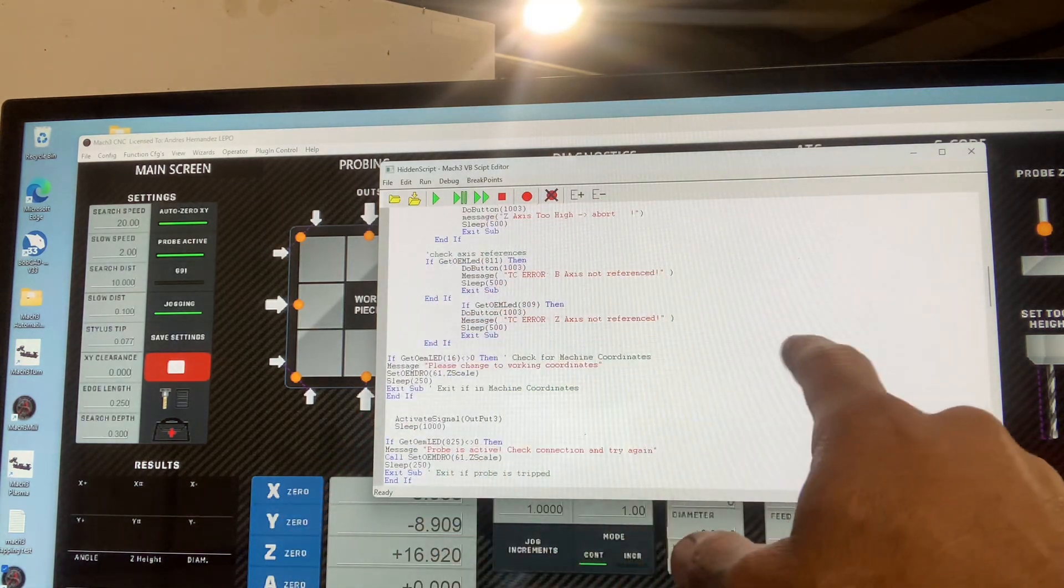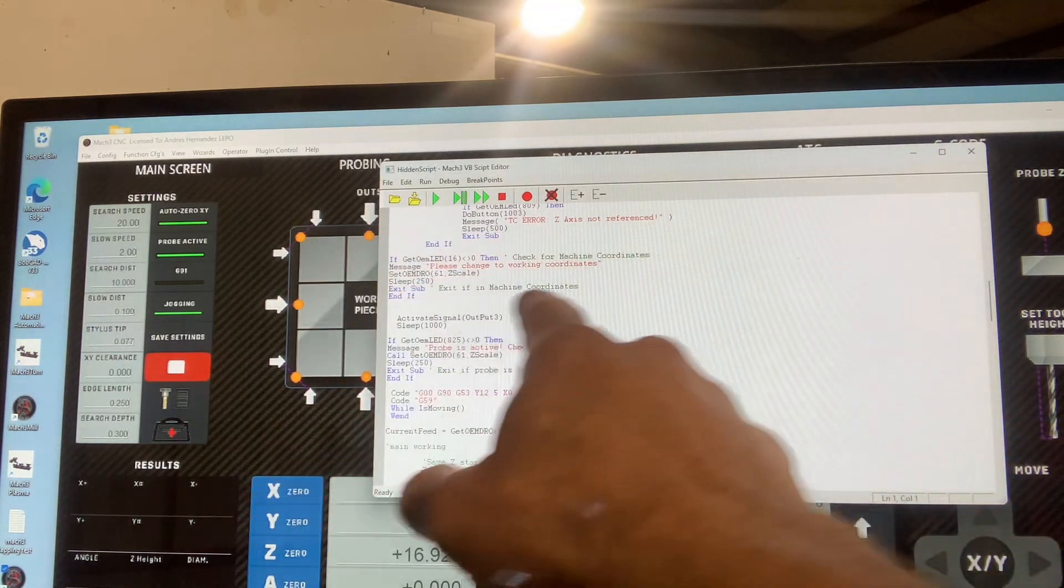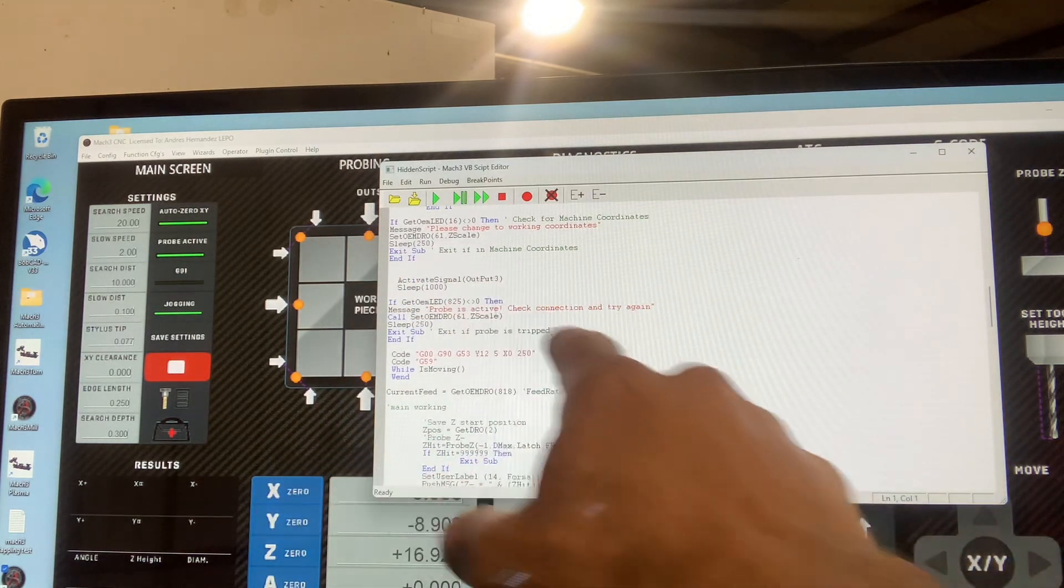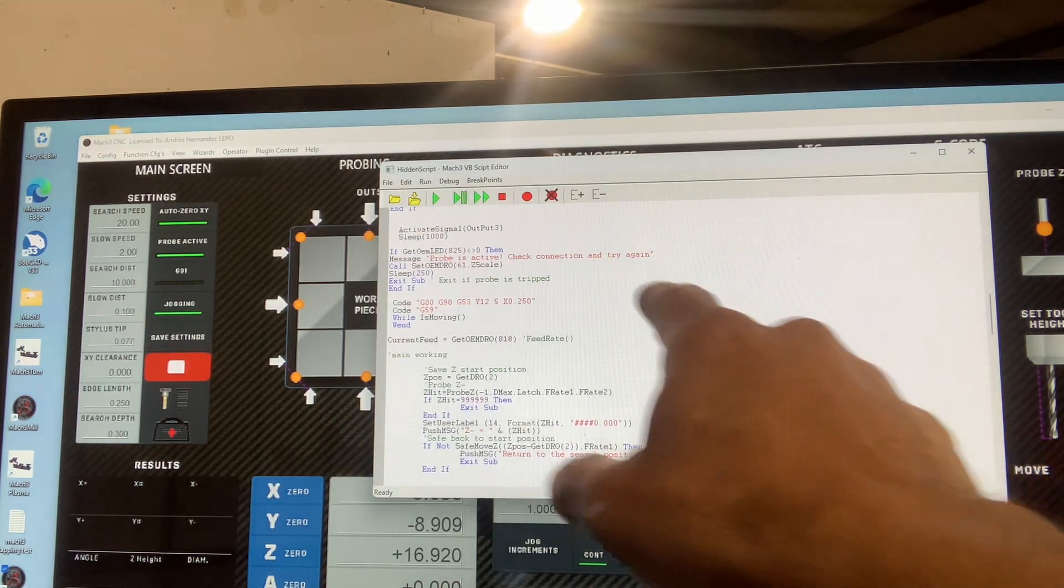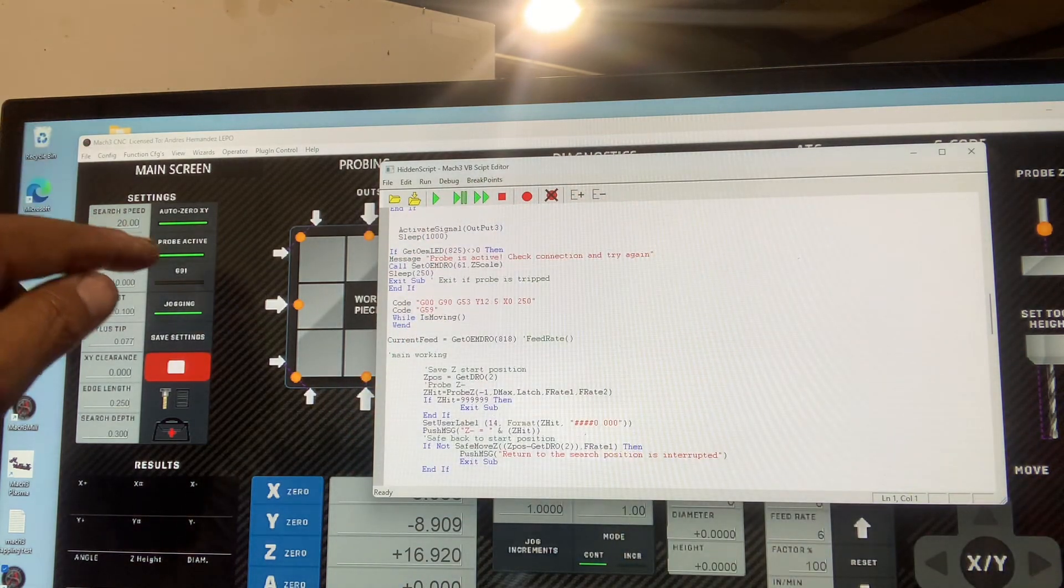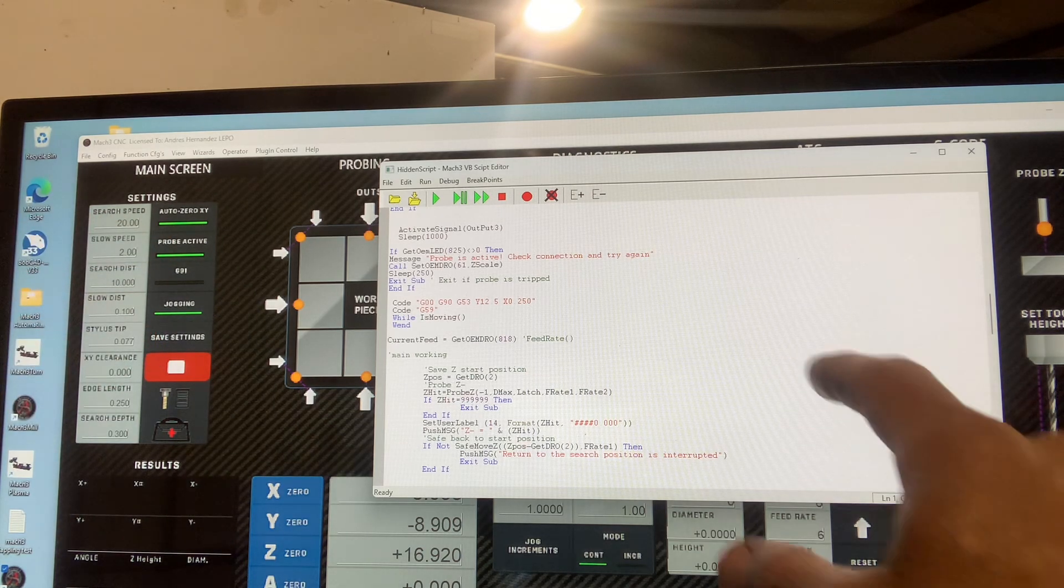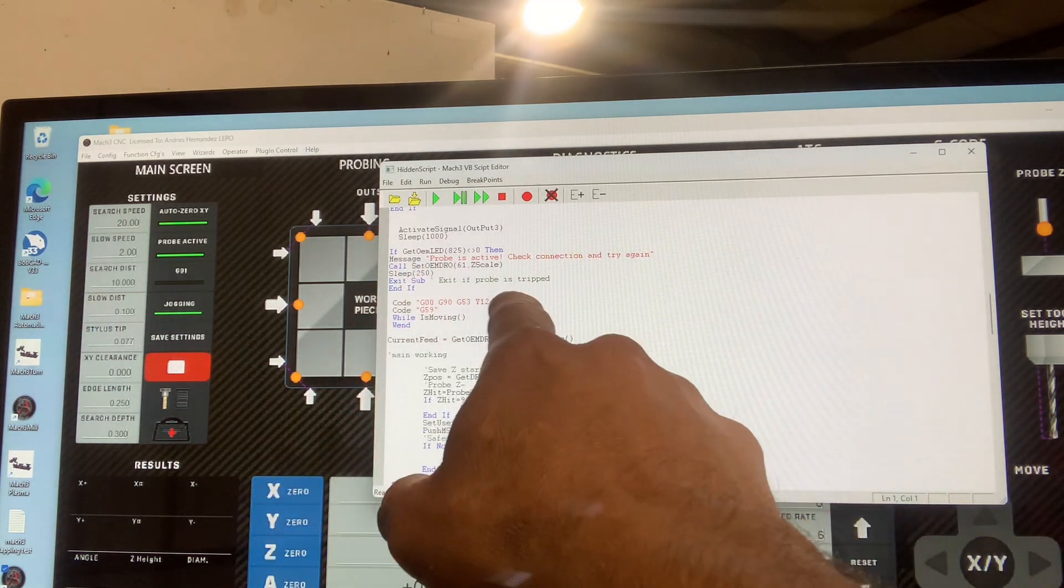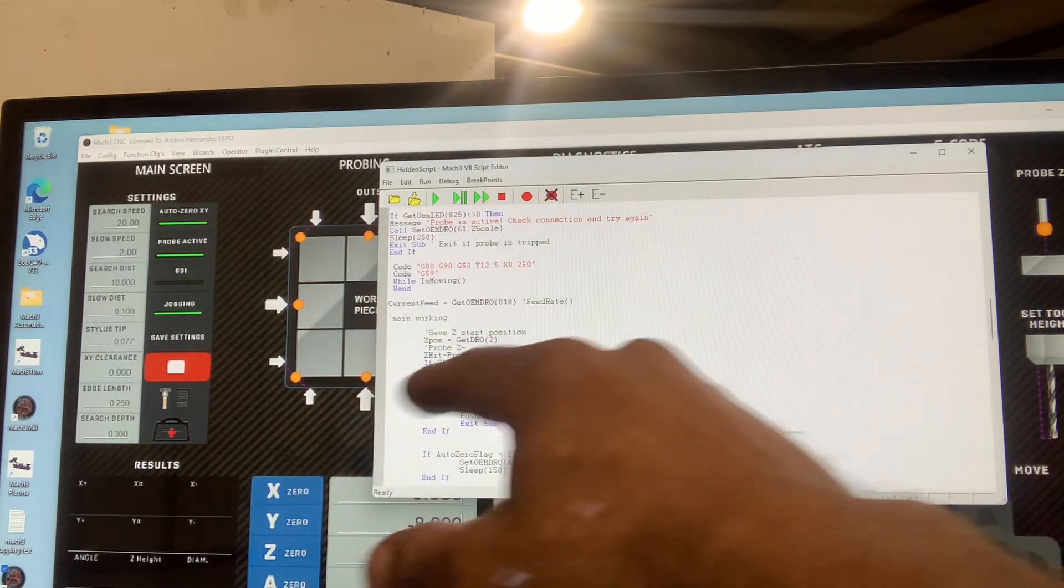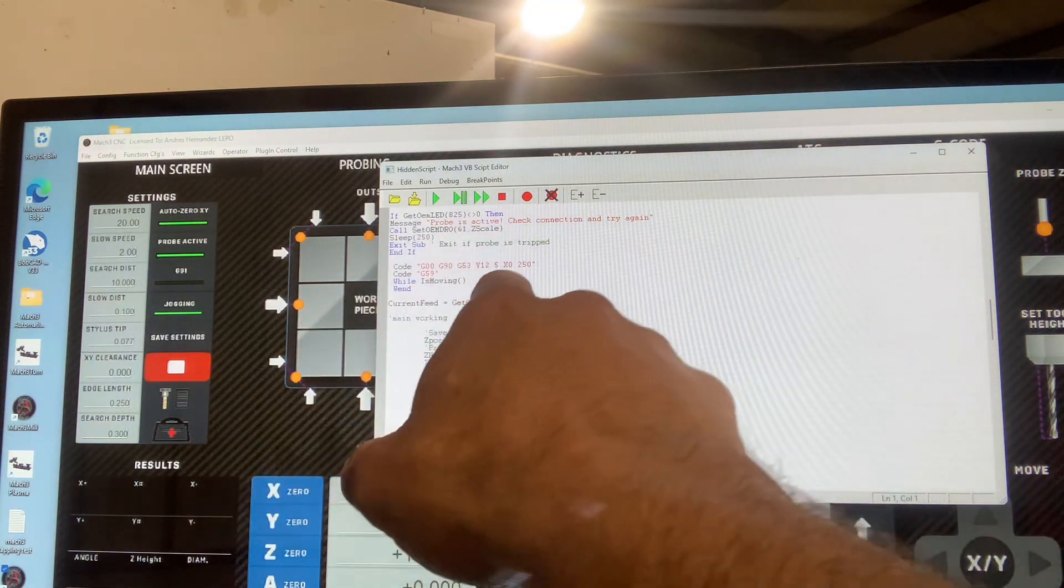Make sure my C-axis is referenced and make sure I'm on working coordinates. Activate output number three, then make sure the activation of output three connected my input to my probe. Then I move to my offset, whatever my set is. If it's yours, it's going to be on different coordinates here.